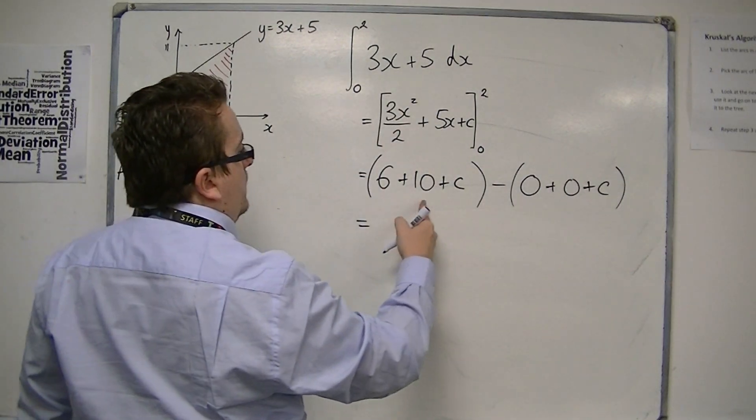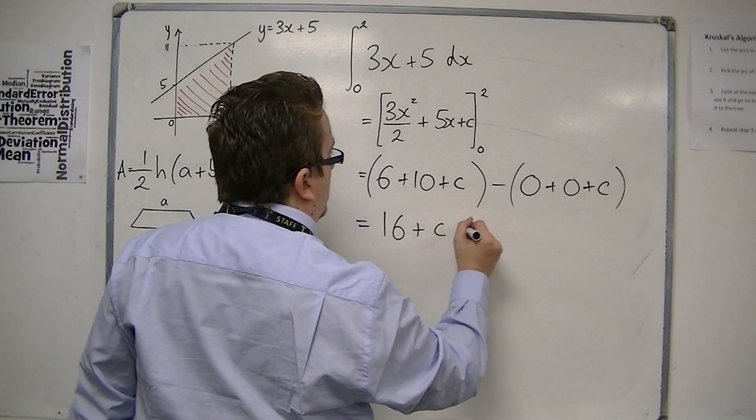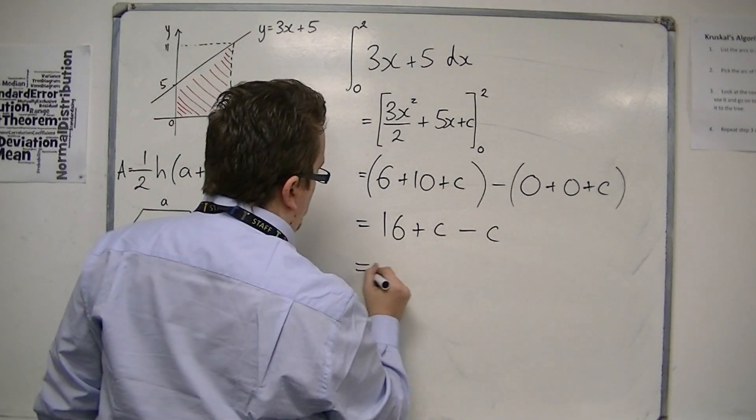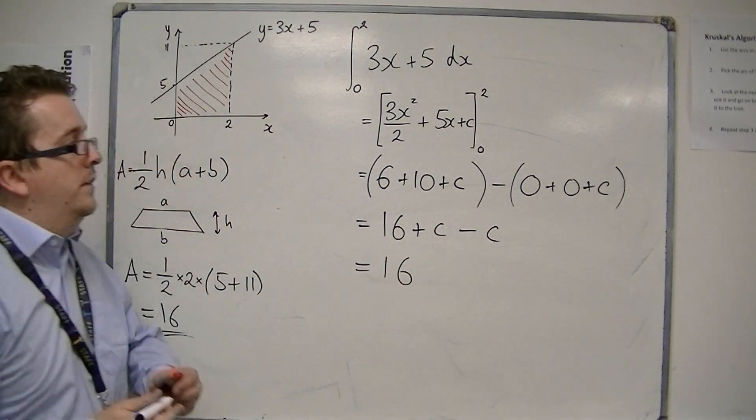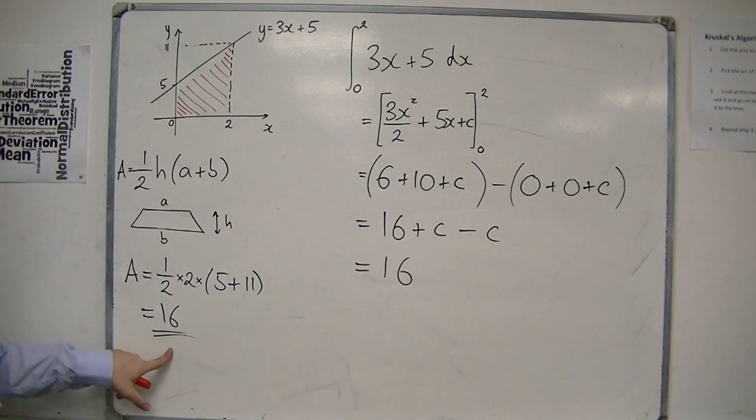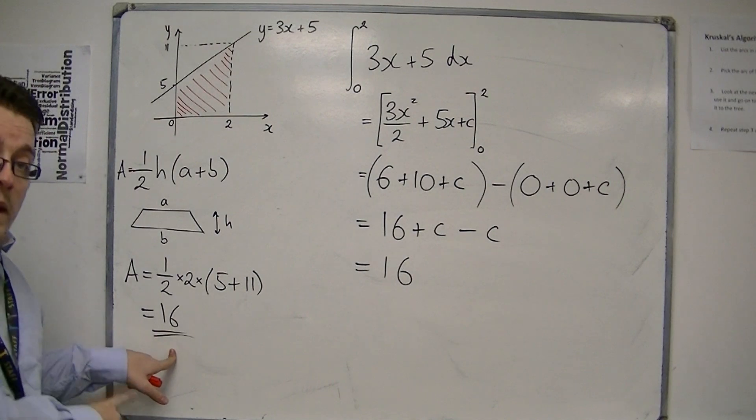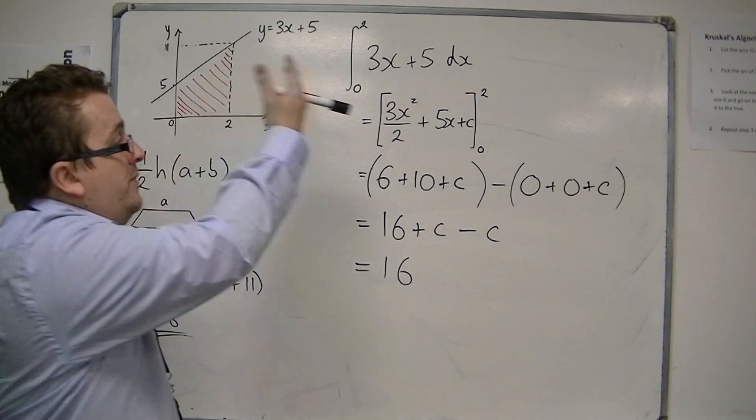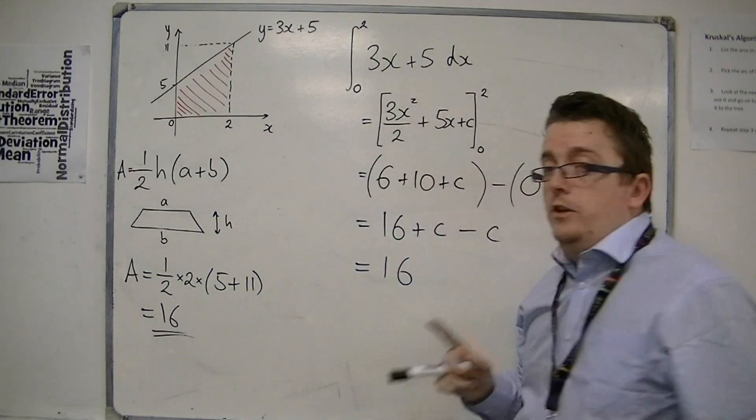So we get 16 plus c, take away c, which would just be 16. So you can see that we end up with exactly the same answer as we did when we were using the area formula for a trapezium. And so this is how integration can be used.